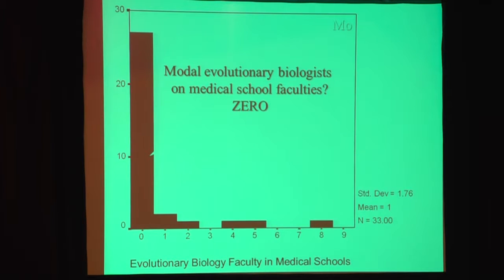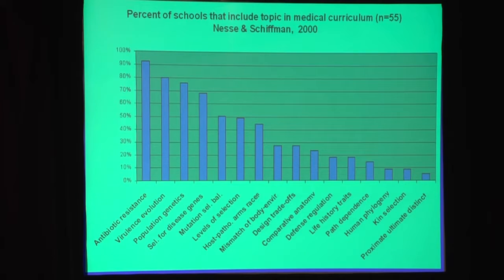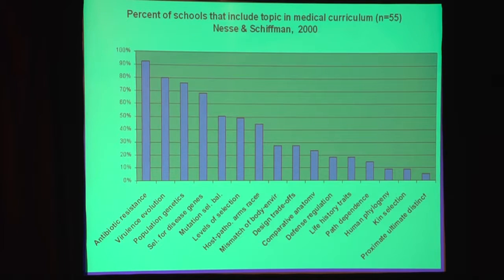Why is there this problem with doctors not knowing too much about it? This is a study a couple of us did a few years ago asking the deans of all the medical schools in North America how many evolutionary biologists do you have on your faculty. For almost all the schools, it's zero. Then we asked what topics do you cover in your curriculum. Almost all of them said yes, we do cover antibiotic resistance and virulence evolution and population genetics. But things like comparative anatomy, design trade-offs, and path dependence are rarely covered. The most fundamental principle — the distinction between proximate and ultimate or evolutionary explanations — is covered by only 5% of medical schools. A number of deans said, 'What's this? It sounds interesting. I've never heard of it.' By the time this talk ends, you will have heard of it.